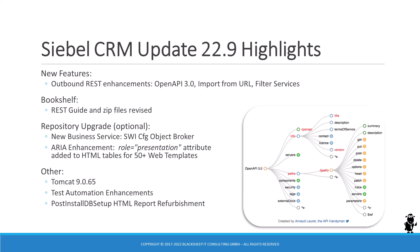The optional repository upgrade includes, among many other objects, a new business service to support the product administration REST API and code updates to several dozen web templates for better accessibility.